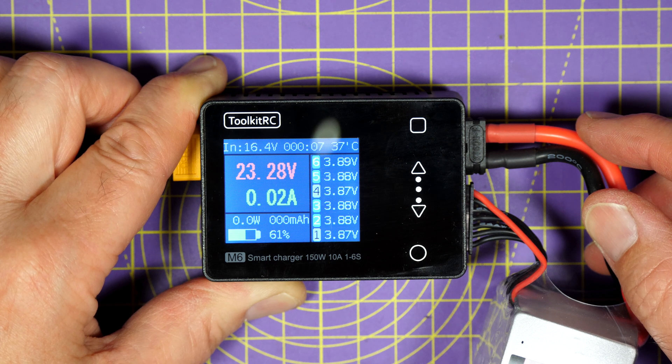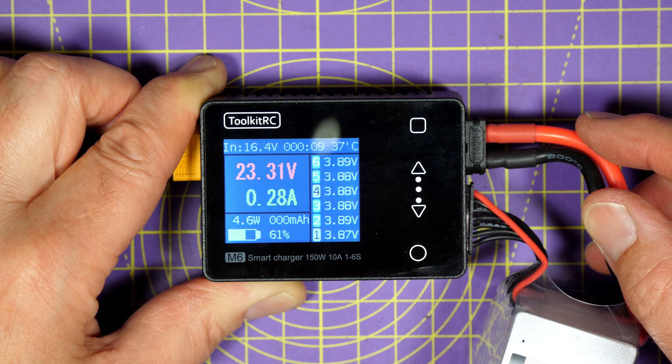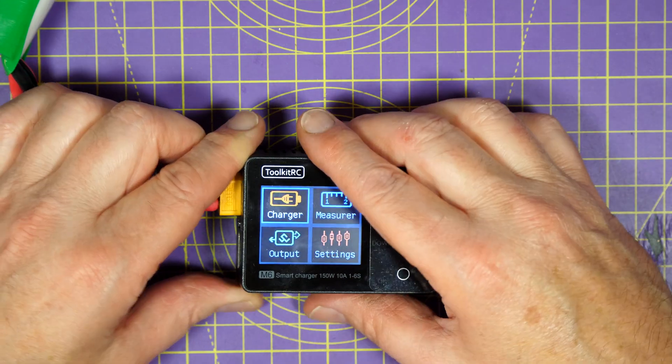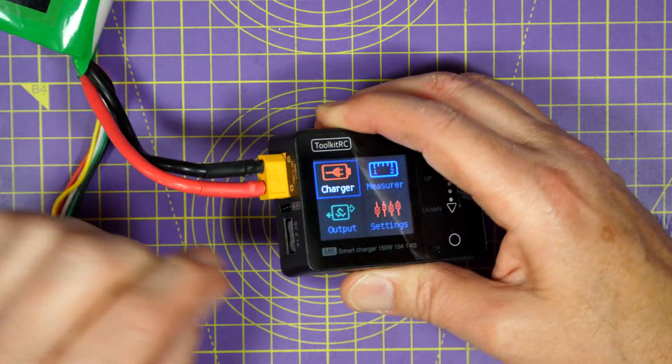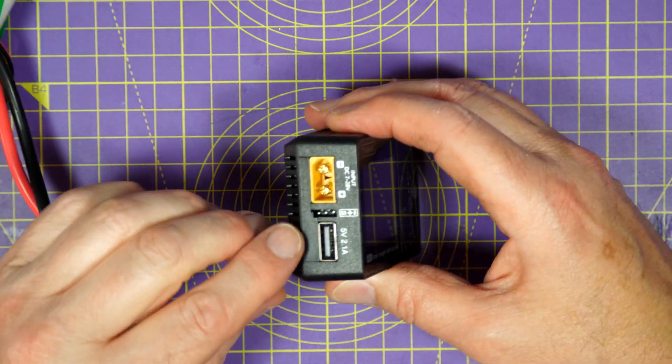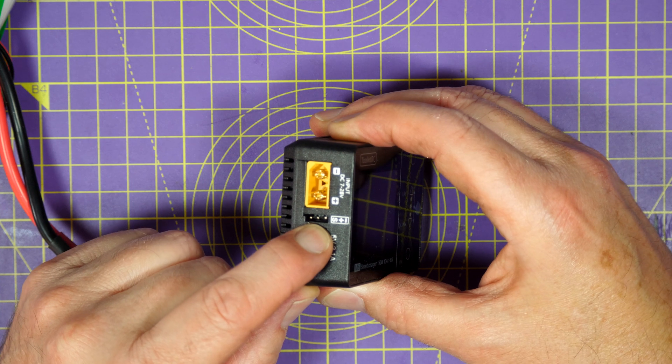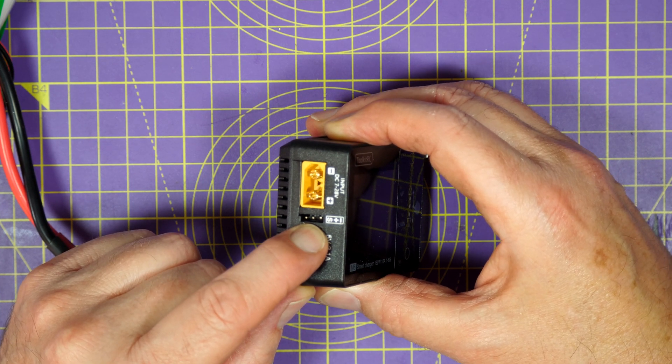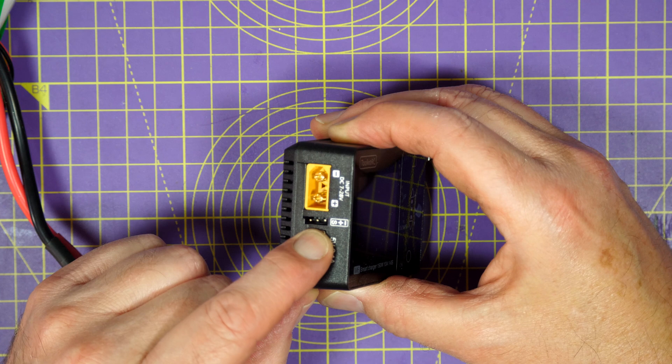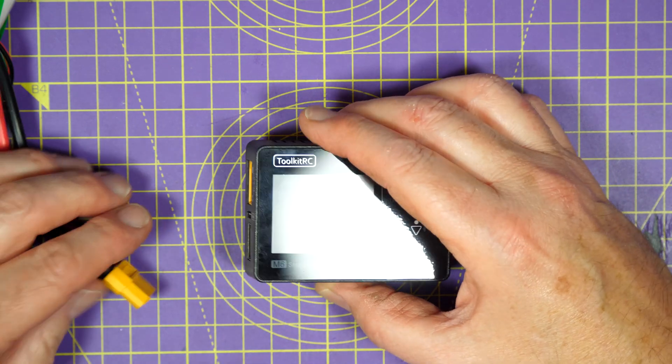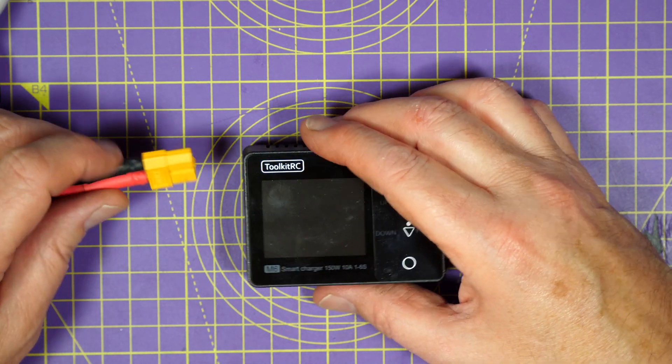Now, this isn't just a charger. It's got a bunch of really useful tools built into it. You can use this servo port on the side here. Let me just take that out. There's a little servo port on the side there. And you can use that to connect and test servos and ESCs. And you can also use this as a variable power supply if you want.